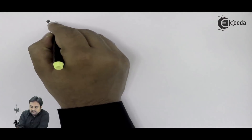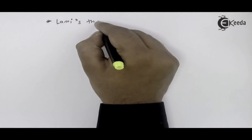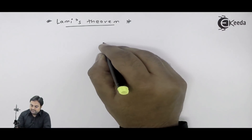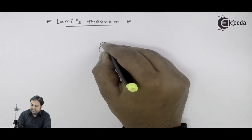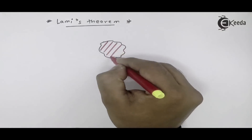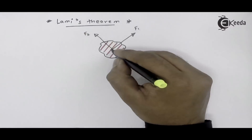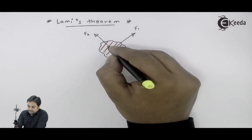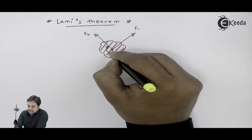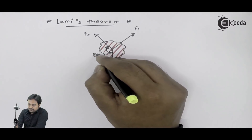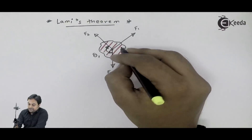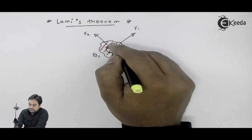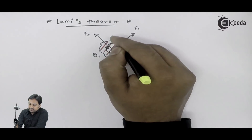We will see what Lame's theorem is. For Lame's theorem, we should remember one diagram. Suppose we have a body of any given shape. Theta1 is the angle between the second and third force, theta2 is the angle between the first and third force, and theta3 is the angle between the first and second force.